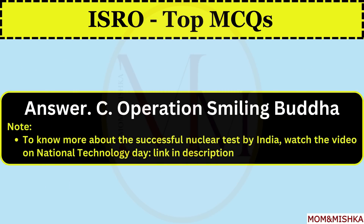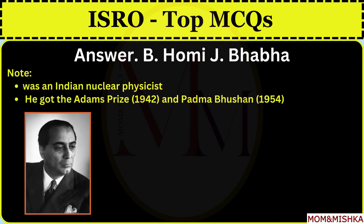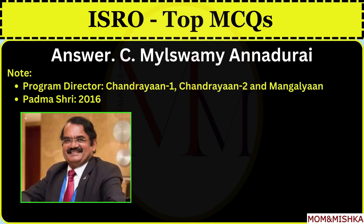What was the name of the first successful nuclear test conducted in India in 1974? Operation Smiling Buddha, option C. Who among the following is known as the father of India's nuclear program? Homi J. Bhabha, option B. He was an Indian nuclear physicist who received the Adams Prize in 1942 and Padma Bhushan in 1954. Who among the following is known as the Moon Man of India? M. Annadurai, option C. He was the program director of Chandrayaan 1, Chandrayaan 2, and Mangalyaan, and received the Padma Shri in 2016.